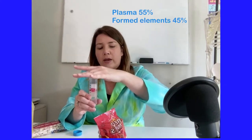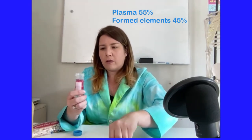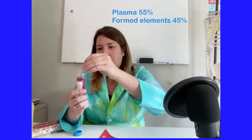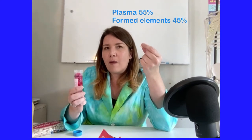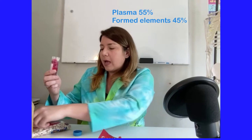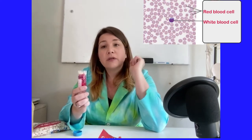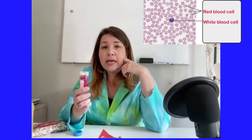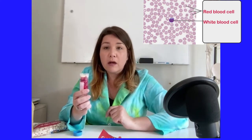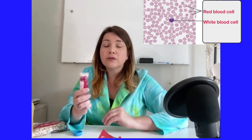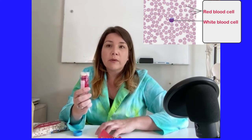Now I'm going to fill the rest with the formed elements — red blood cells, white blood cells, and platelets — which make up the other 45%. Red blood cells make up about 86.6%, so almost 87% of the formed elements, so I'm filling most of this with Red Hots. White blood cells make up only 3%, so I'll just put in one or two lima beans. I'm also going to pop up a picture under the microscope so you can see what blood looks like — you'll notice the red blood cells dominate, and white blood cells are very hard to find.